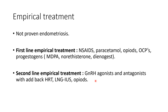For the second line of empirical treatment, we have GnRH agonists and antagonists with add-back HRT. They are second-line because of side effects, so we have to add back HRT if we are planning long-term GnRH agonist or antagonist treatment. Opioids can appear in both first and second line depending on their withdrawal symptoms and side effects.